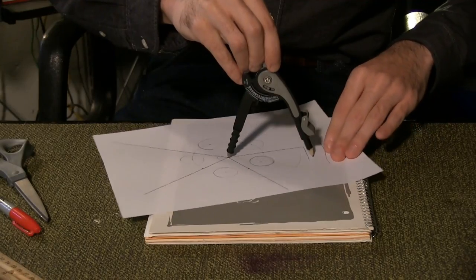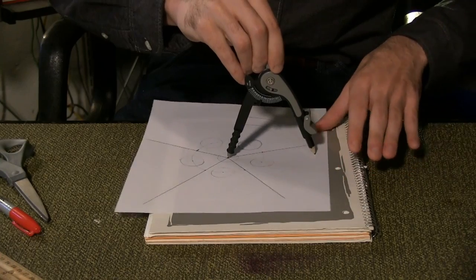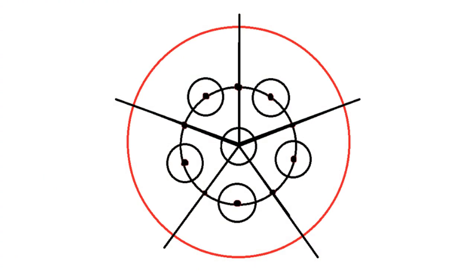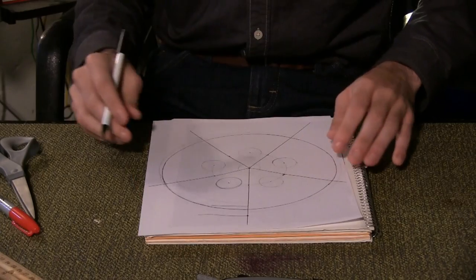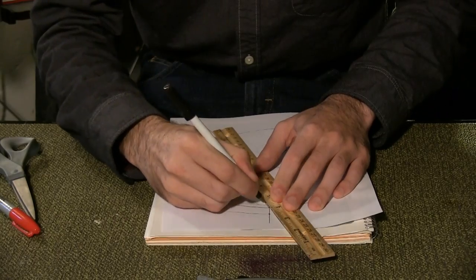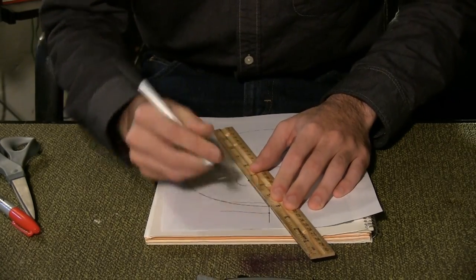Using the middle as a center point again, draw an 8 inch circle around everything. Where the lines meet this outer circle, mark the point. Draw a line from these end points to the center points of each of the 5 circles.